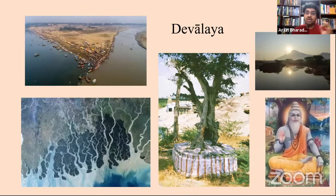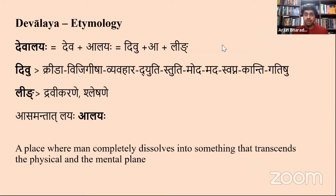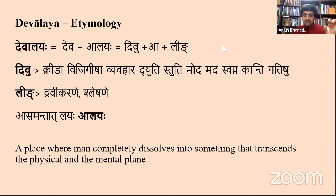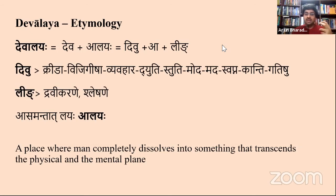Anything and everything can be divine for us — that's the bigger spiritual concept of the Indian Devalaya. The word Devalaya comes from two root words: 'divu,' from which the word Deva comes, and 'laya.' The word 'divu' has meanings like kreda, dyuti, moda, kanti, gati, and so on. 'Laya' means dravi karane and shleshane. So Devalaya, to put it in sum, is a place where we can lose ourselves, forget ourselves, melt down in a playful joy, in radiance, in brilliance, in art — there are multiple dimensions of meaning for the word Devalaya.